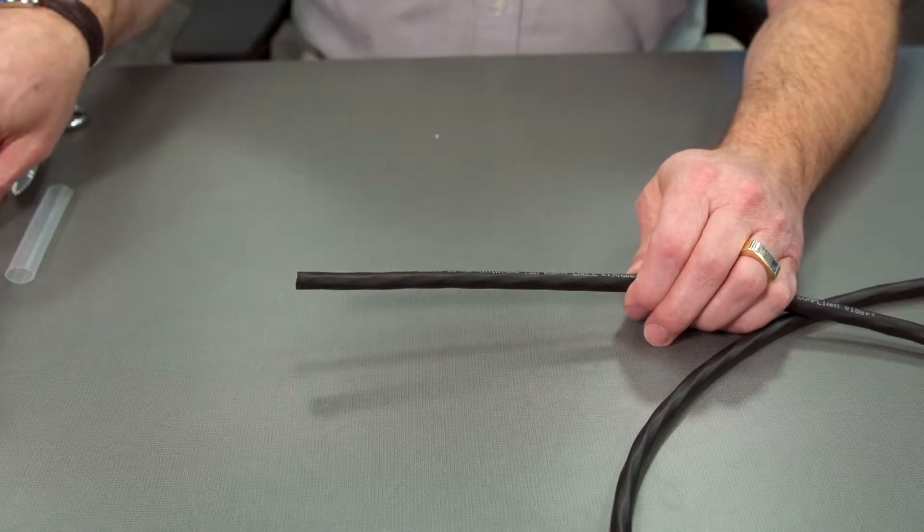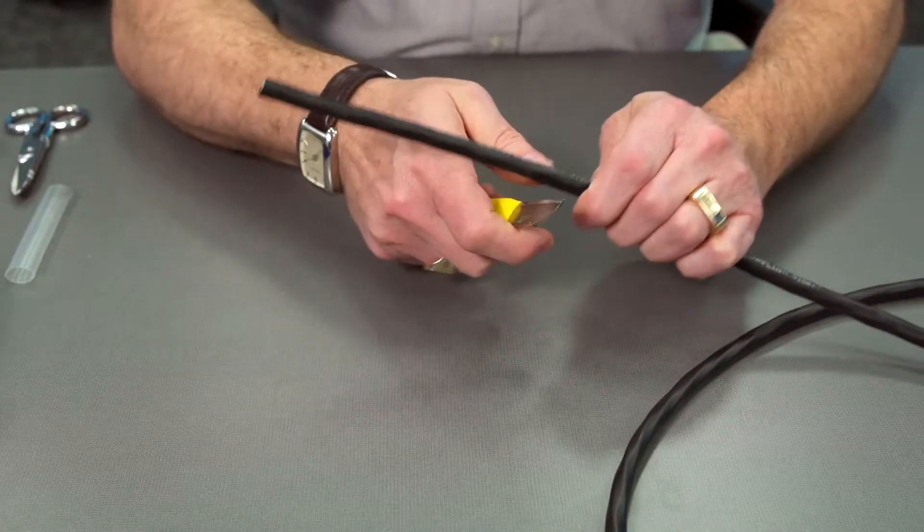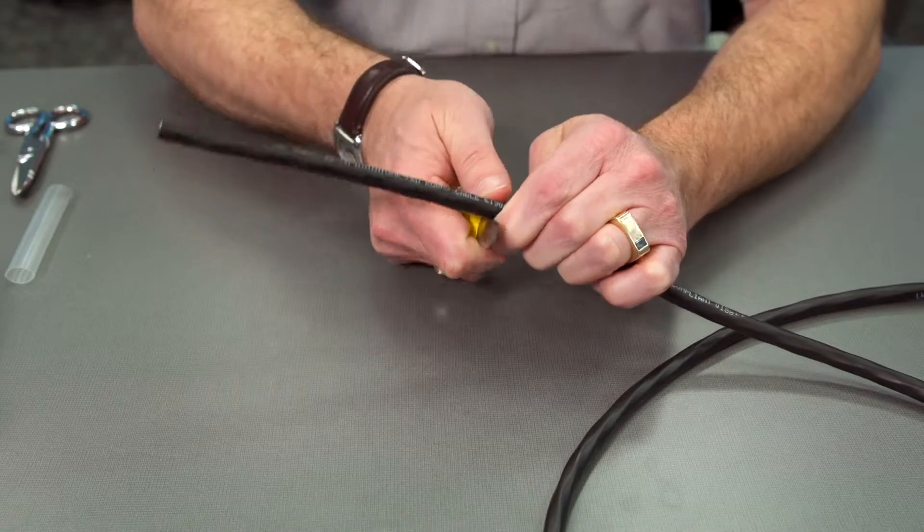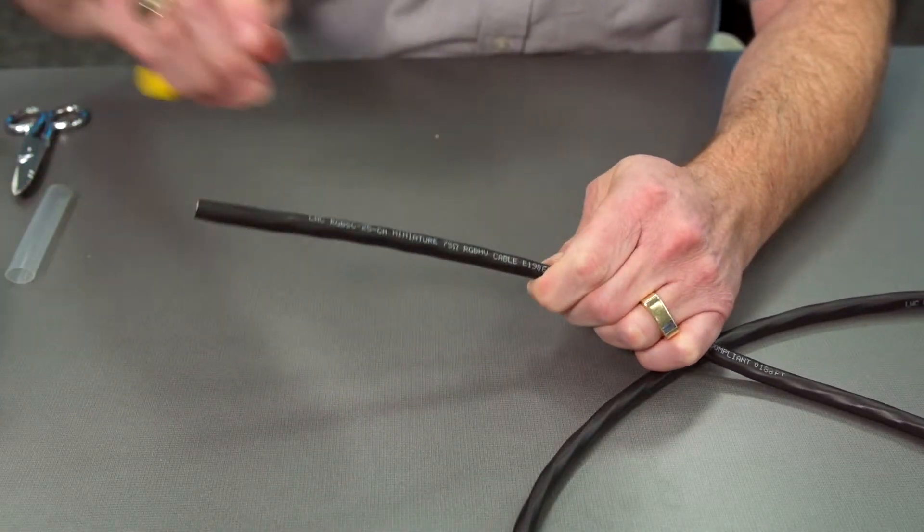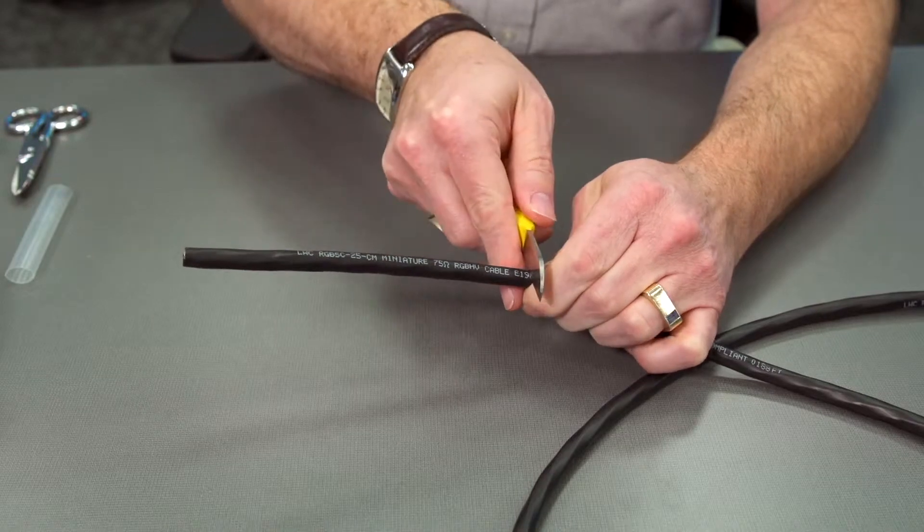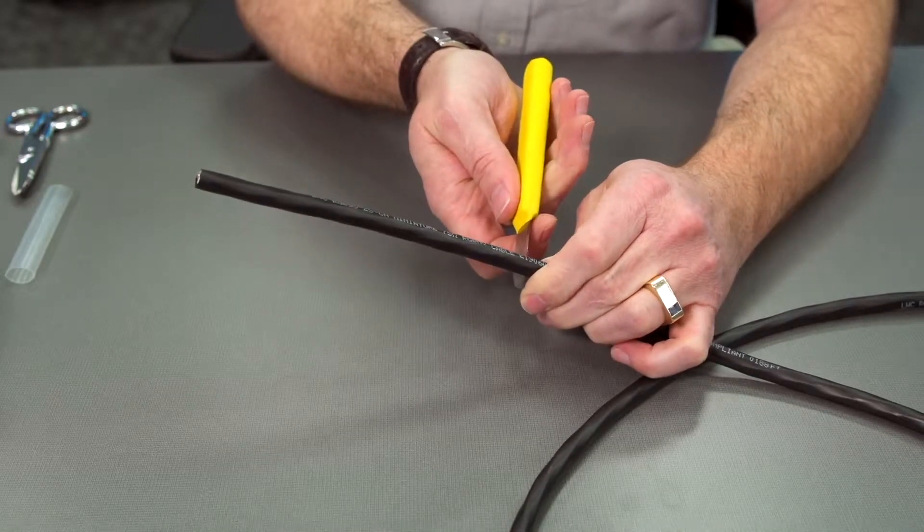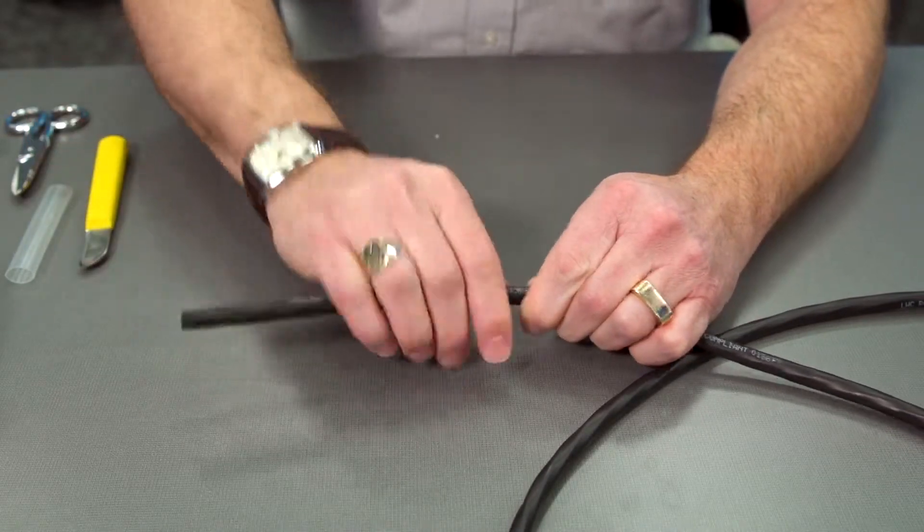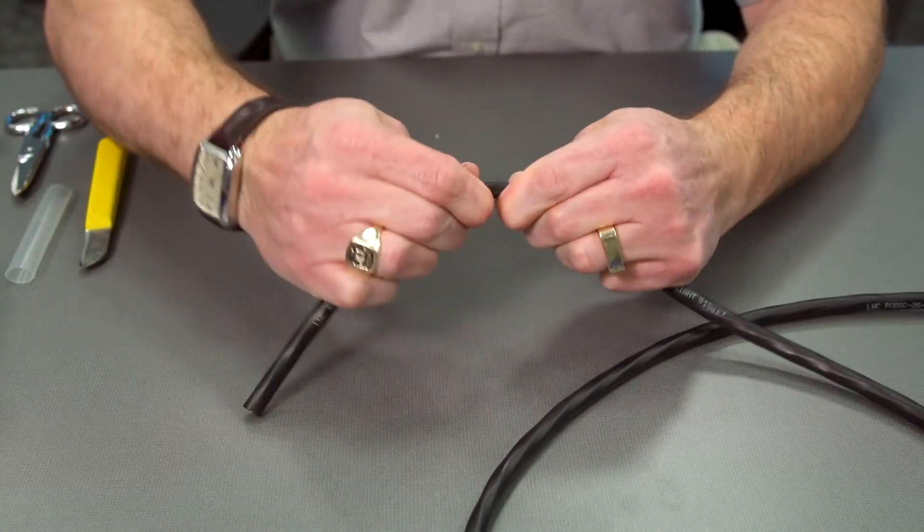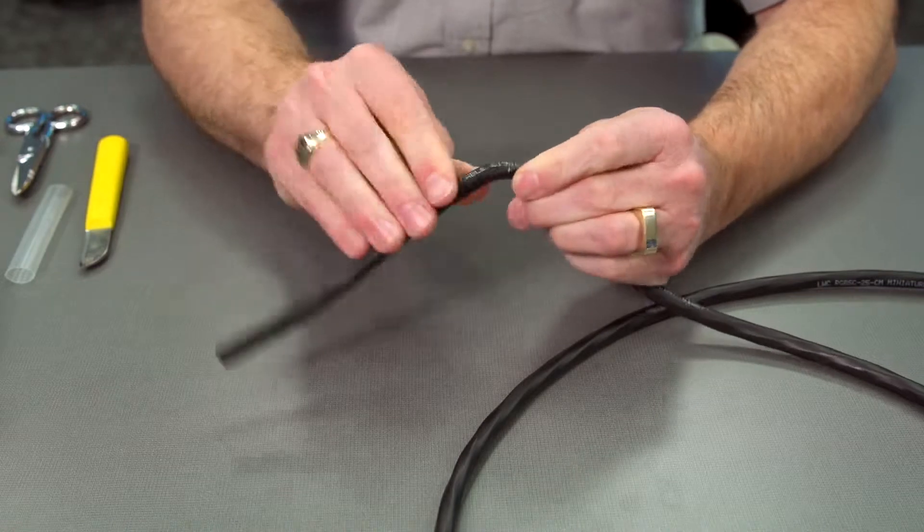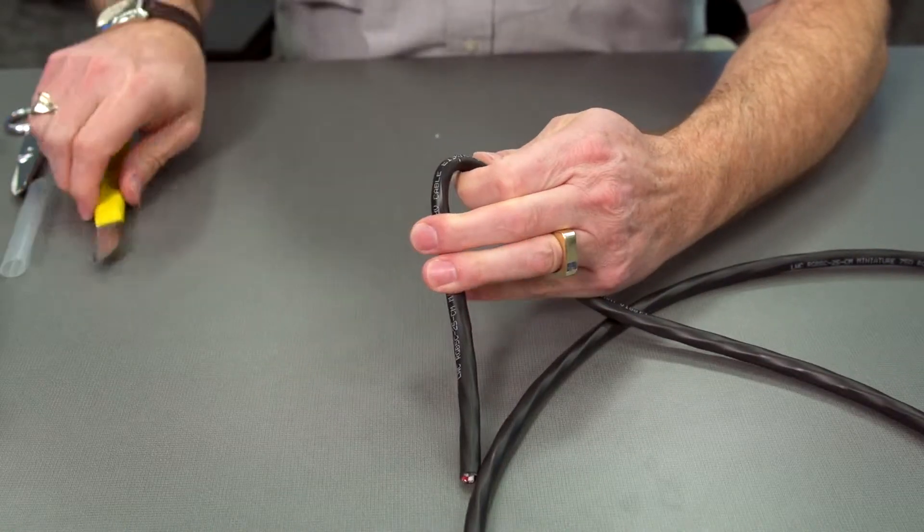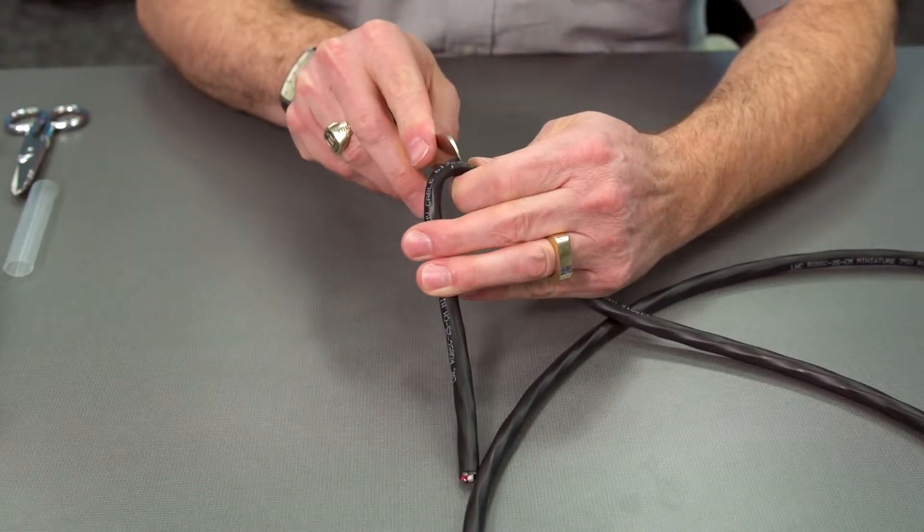You just rip that back first and then we'll get to our compression. So all you need to do is go around the cable and just score it as we go with our knife. And then we should be able to split this by just bending it. And if we have any spots that still need a little help, we'll get our knife back and score a little bit more.